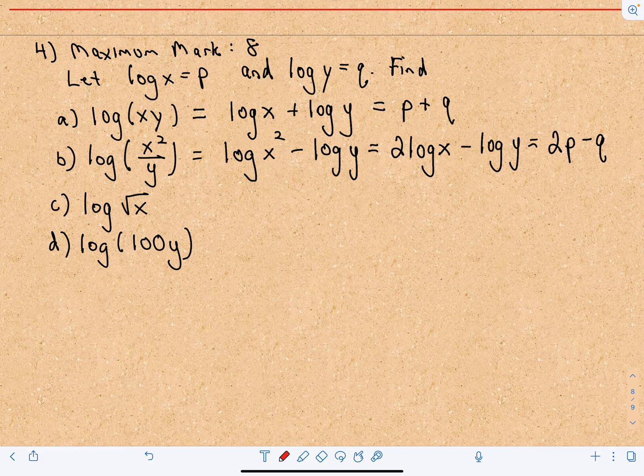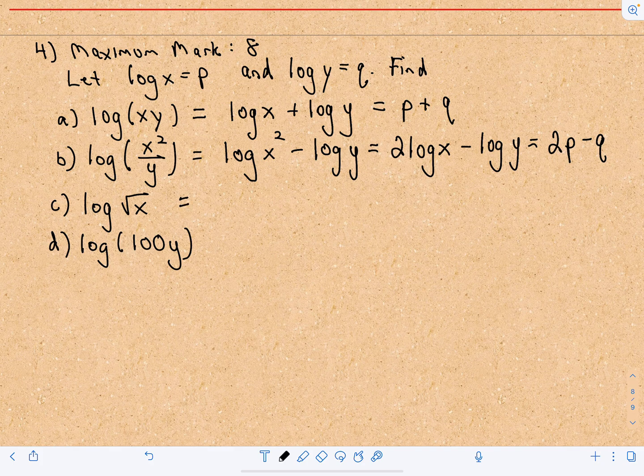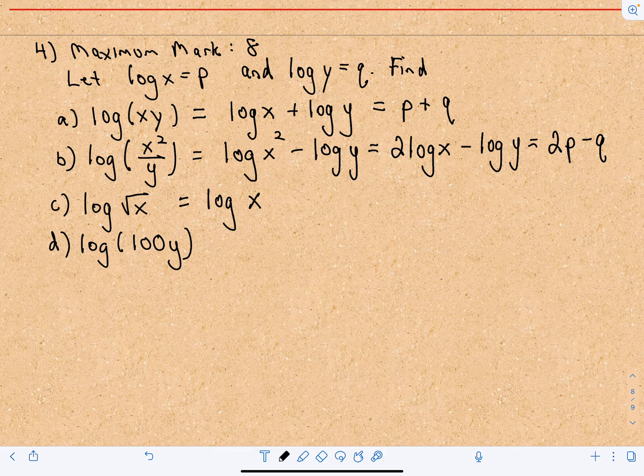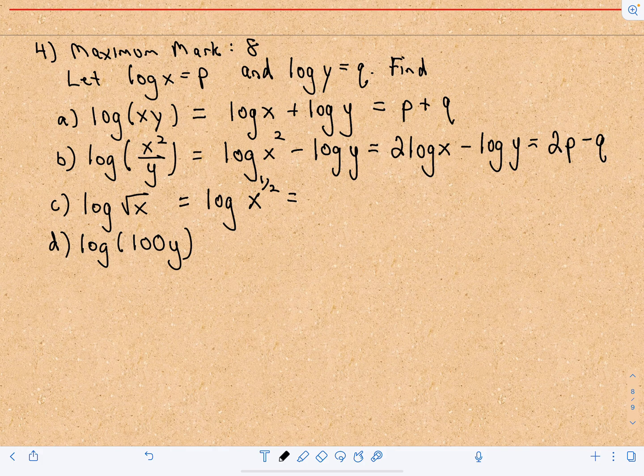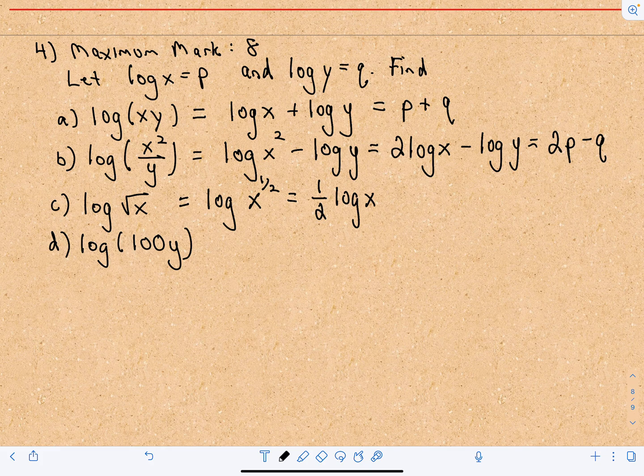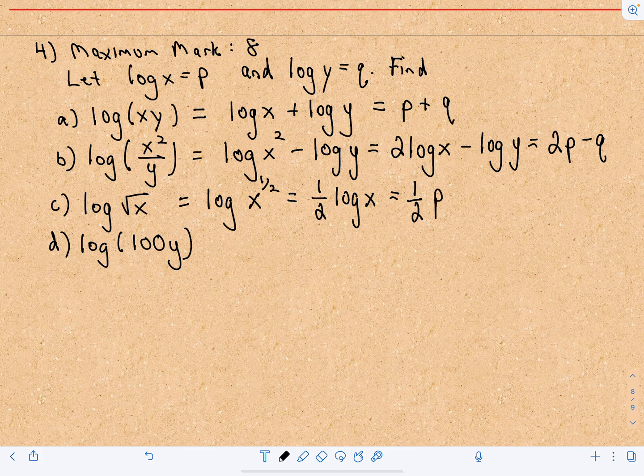So C is the same idea that we just used with our exponents. The first thing I'm going to do is rewrite this. We've got log of the square root of X, but recall that the square root of X is simply X raised to the 1 half power. Now I'm going to do the same thing, just pull that exponent out front so we'll have 1 half of log of X, and again we'll just replace our log of X with P. So we'll be left with 1 half of P, or if you wanted to you could write that as P over 2.